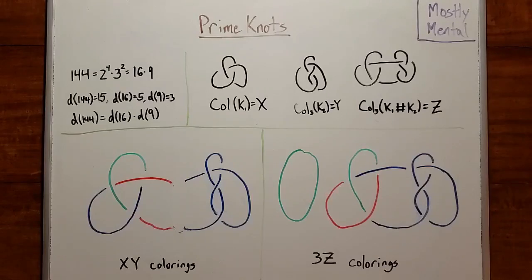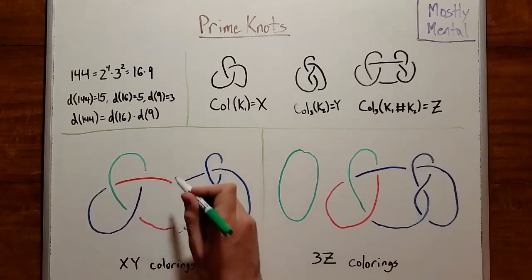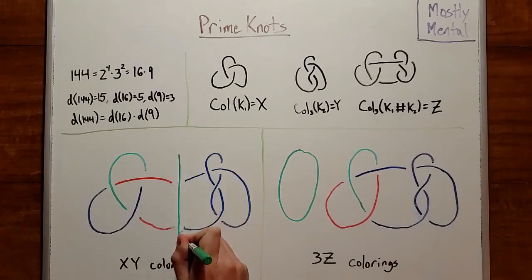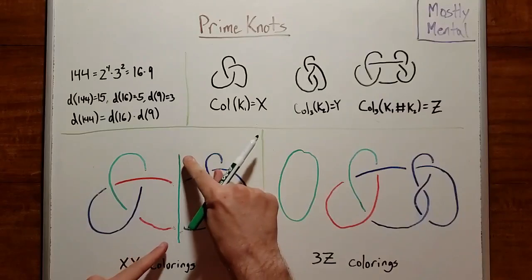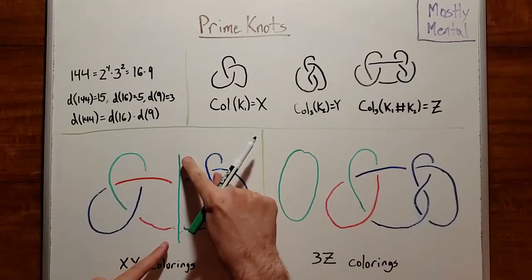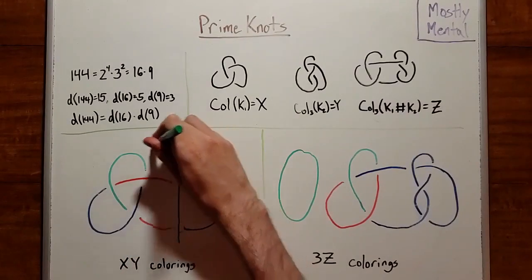Not to worry though, there's a simple fix. Just lay a new strand across the gap. Since these are red and these are blue, this new strand must be green. And now there are only two loose ends, and they're the same color, so we can connect them.